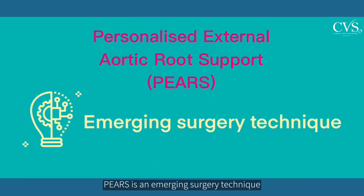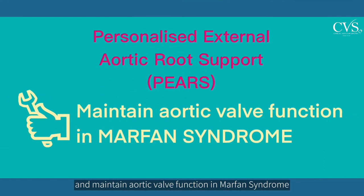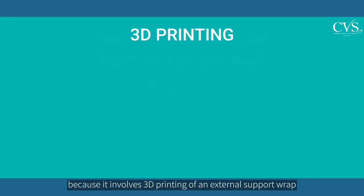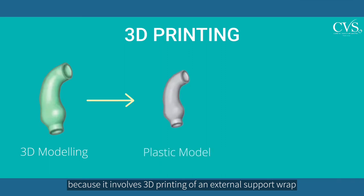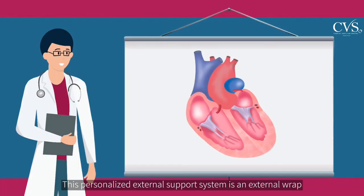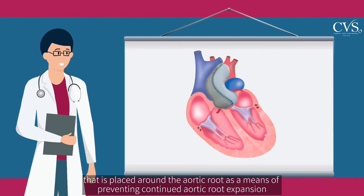PEARS is an emerging surgical technique to curb aortic root expansion and maintain aortic valve function in Marfan Syndrome. The procedure is personalised because it involves 3D printing of an external support wrap from detailed CT scan imaging of a patient's own aortic root anatomy. This personalised external support system is placed around the aortic root as a means of preventing continued aortic root expansion.